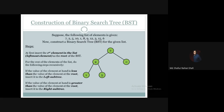Then we take 8. We first compare 8 with the root 7 — 8 is greater than 7, so it will go down to the right subtree. In the right subtree, there is already a node whose root is 10. We now compare 8 with the right subtree root 10 — 8 is less than 10, so 8 goes to the left subtree of 10.